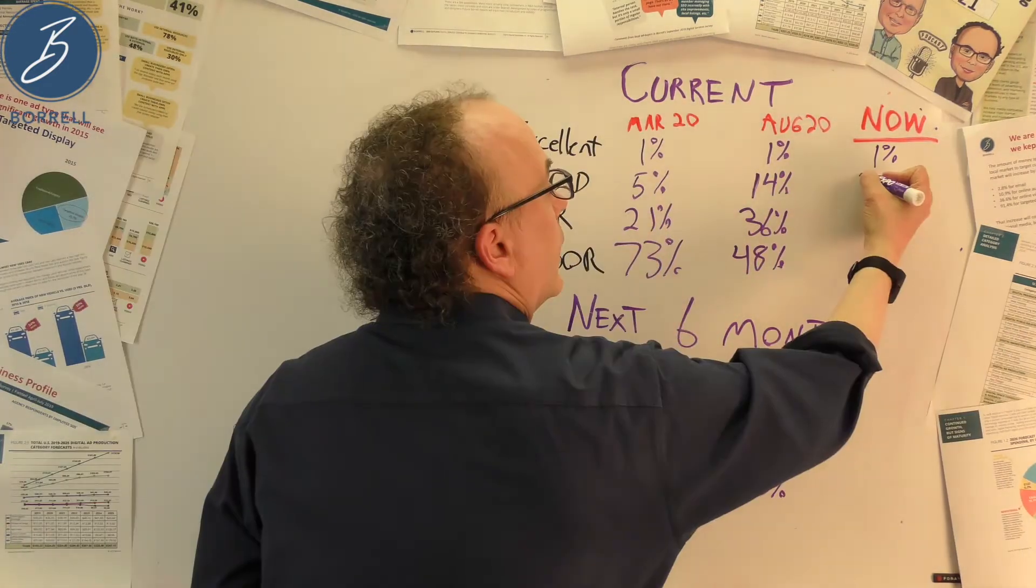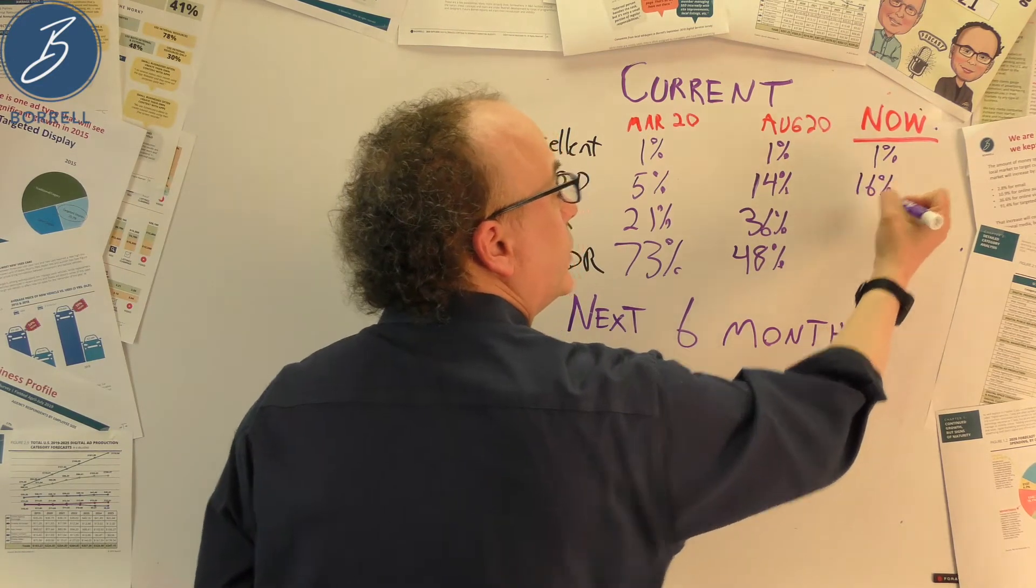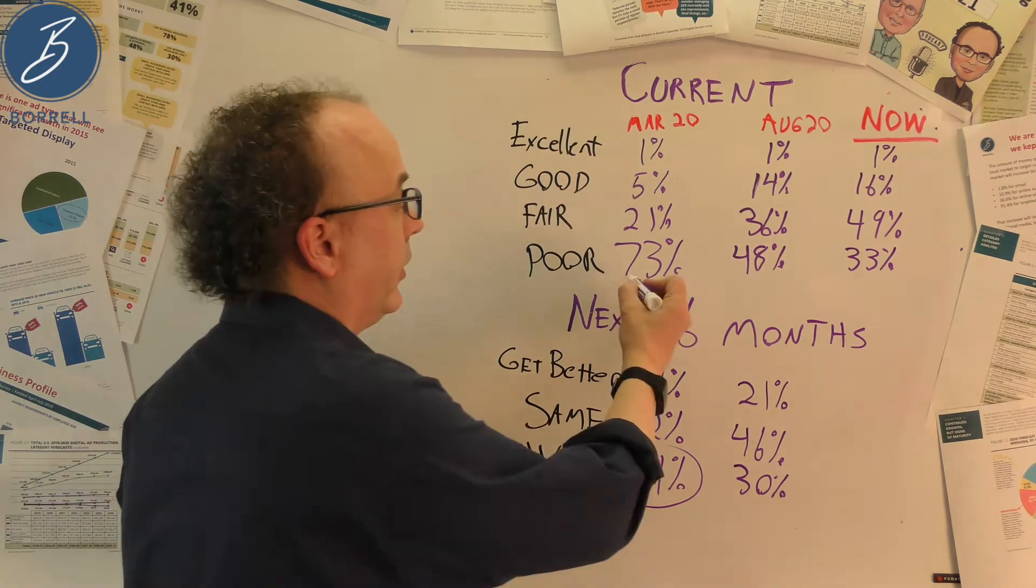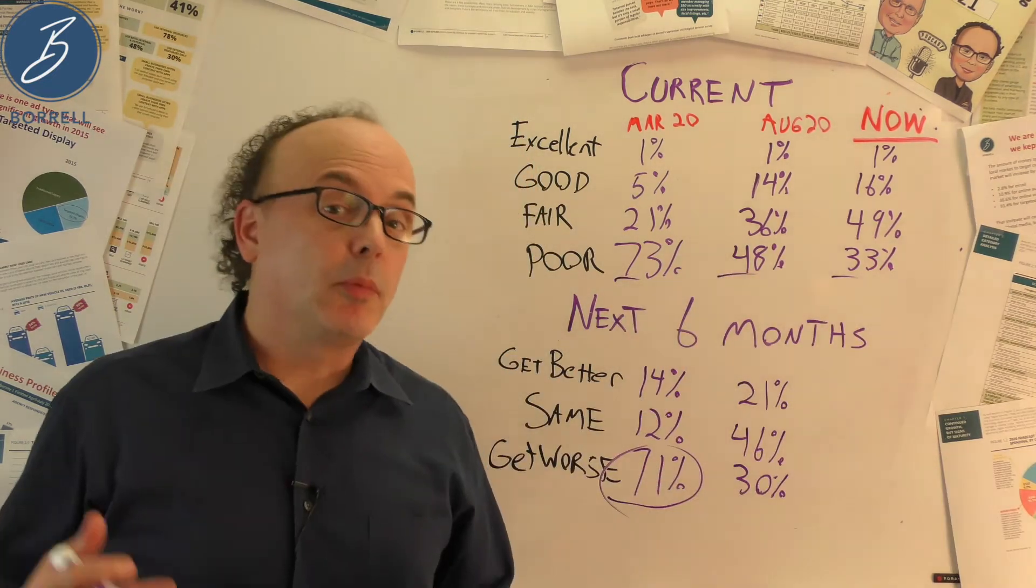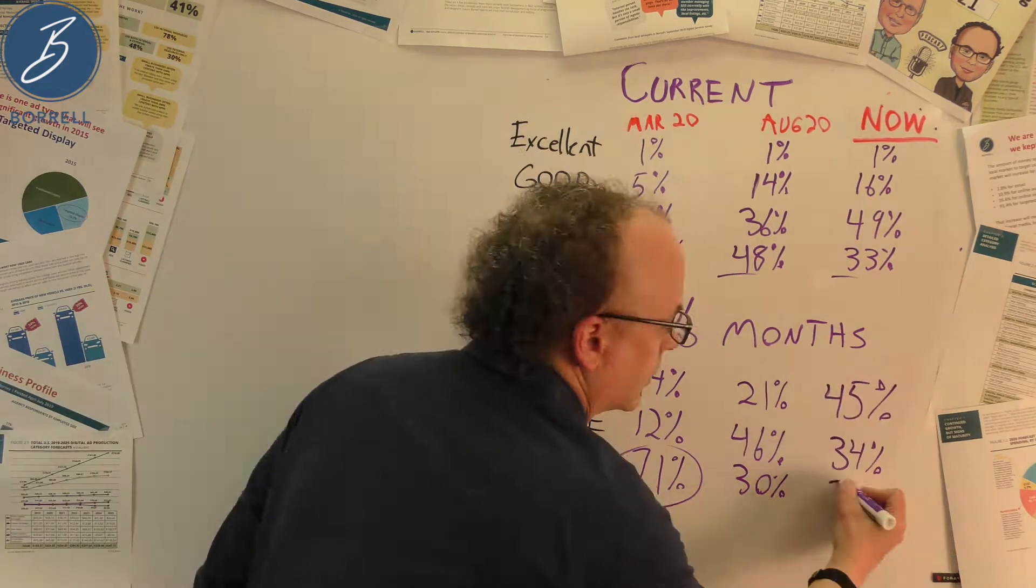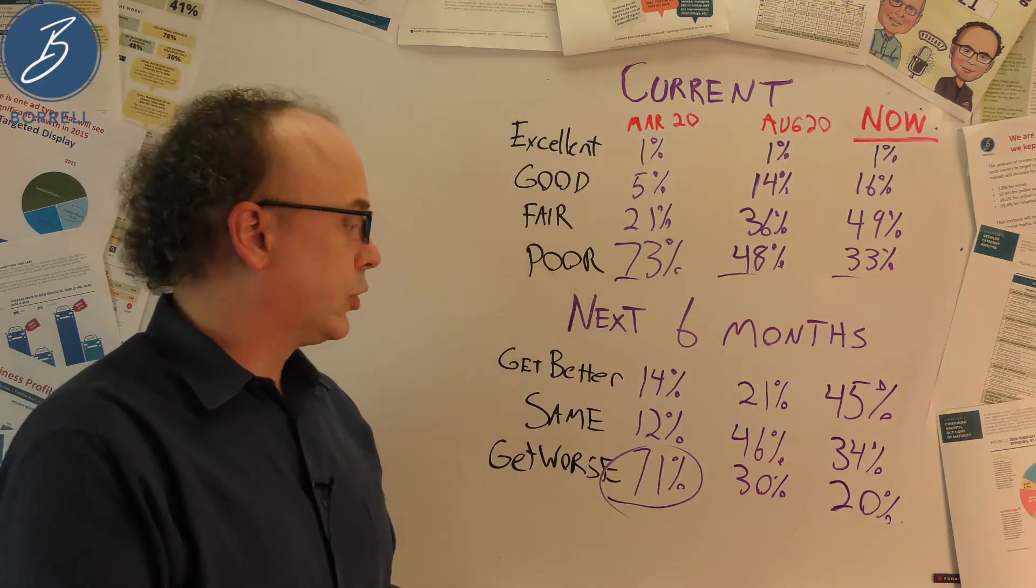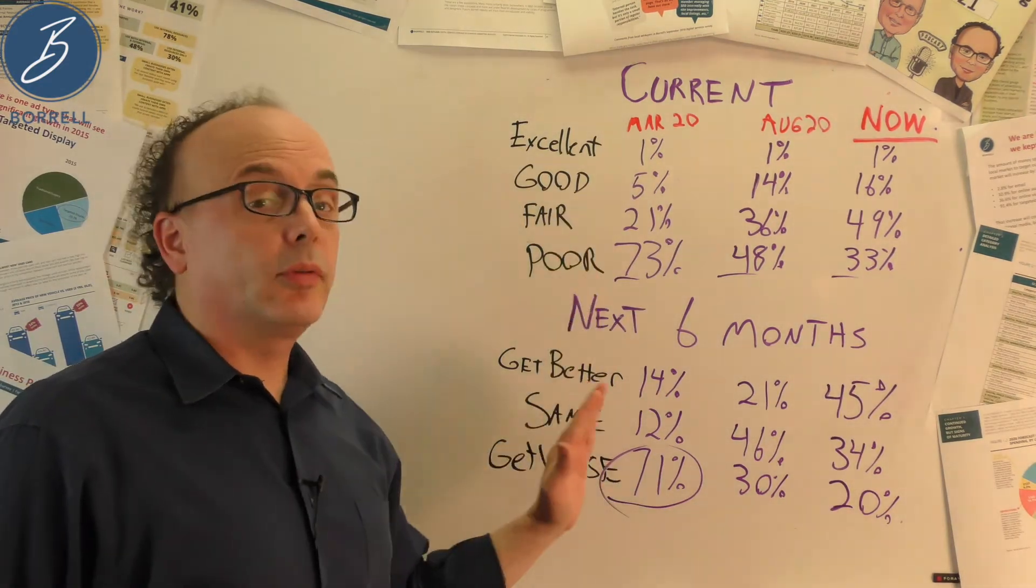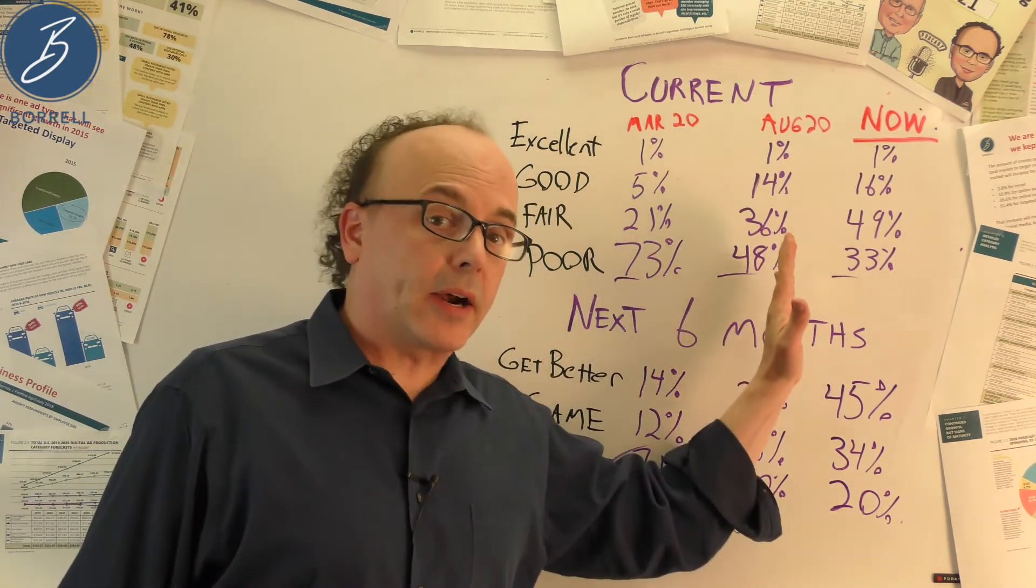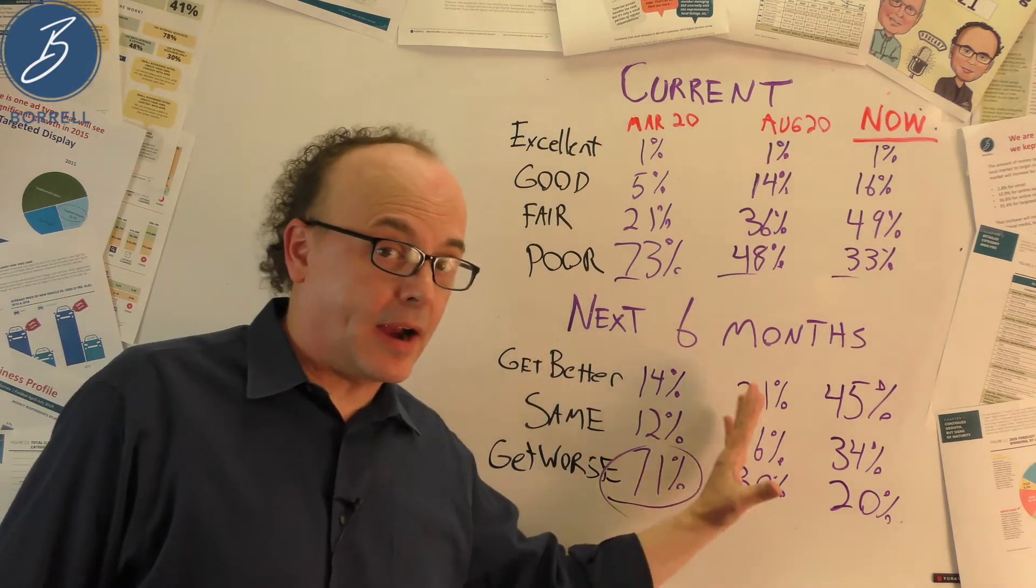1% saying it's excellent. Now 16% say it's good. 49% say it's fair. 33% say it's poor. This is a nice trend we like to see. And when we ask them about the next six months, from this point, six months out, here's what they said. 34% say it's going to stay the same. 20% say it's going to get worse. A year ago, things were dark and they thought they were going to get worse. And though it's not back to pre-pandemic standards, it is swinging better. There is optimism in the air.